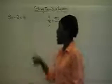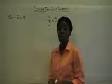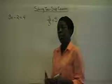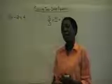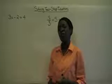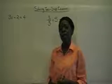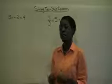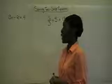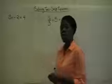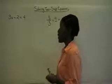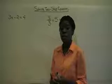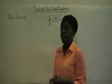In our first example, we have 3x minus 2 is equal to 4. We're going to do the opposite operation. The key to solving the equation is just getting that variable on one side by itself, so we have to remove the numbers and terms on that same side as the variable. In this case, we're going to first move the 2 from that side by using the inverse operation.